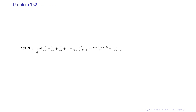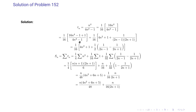Problem 152: show that 1^4/(1·3) plus 2^4/(3·5) plus 3^4/(5·7) and so on up to n^4/((2n−1)(2n+1)) equals n(4n squared plus 6n plus 5)/48 plus n/(16(2n+1)). So our T_n is n to the power 4 divided by 4n squared minus 1.